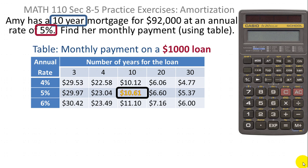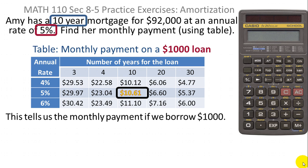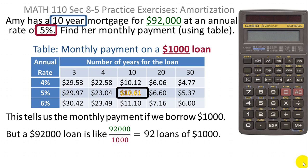So if Amy had only borrowed $1,000, her monthly payment would be $10.61 per month. But we know she borrowed more than that, so we have to take that into account. She actually borrowed $92,000, so we need to know how many thousands she borrowed — in other words, how many $1,000 loans she took out. Borrowing $92,000 is like borrowing $1,000 ninety-two times.